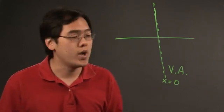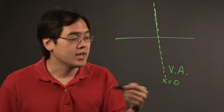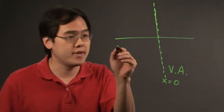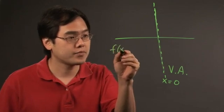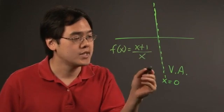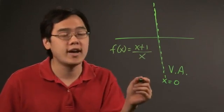Now this happens when 0 is going to cause an undefined value in the denominator only. So for example, if you have a function x plus 1 over x, if you plug in 0 that's going to give you undefined in the denominator.